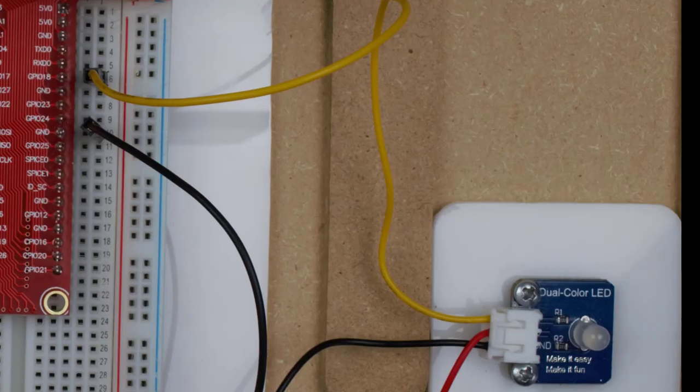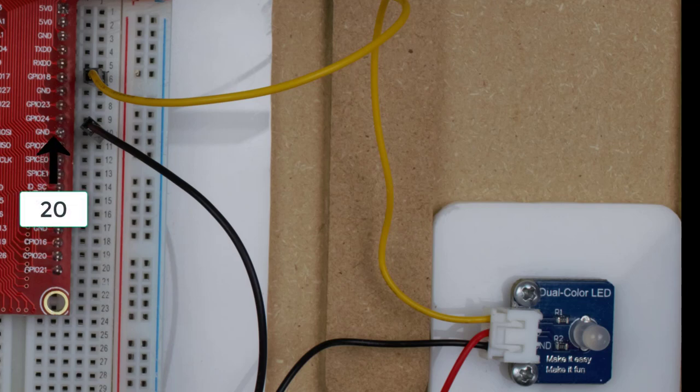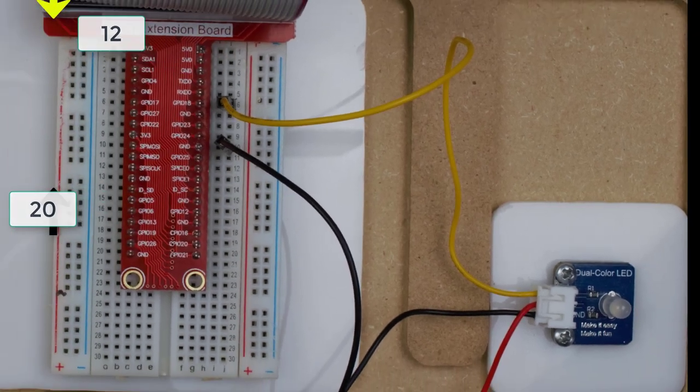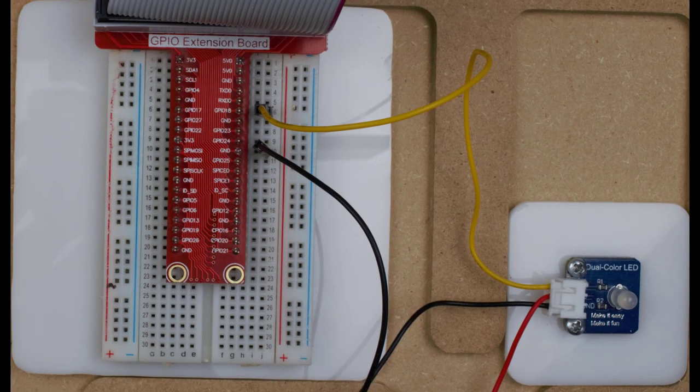Looking back at our GPIO extension board, we should see that the black wire is connected to physical pin number 20, which is a ground, and our yellow wire is connected to GPIO 18, which is physical pin number 12. Our board is now set up to run our first program.